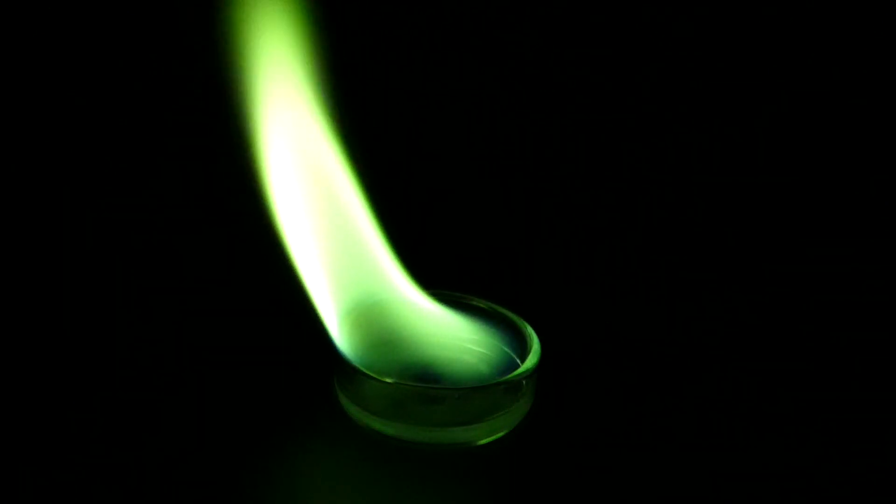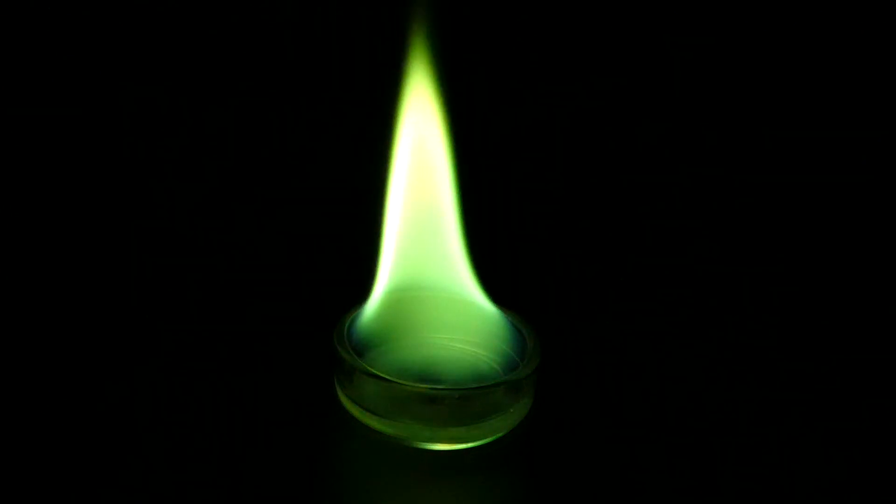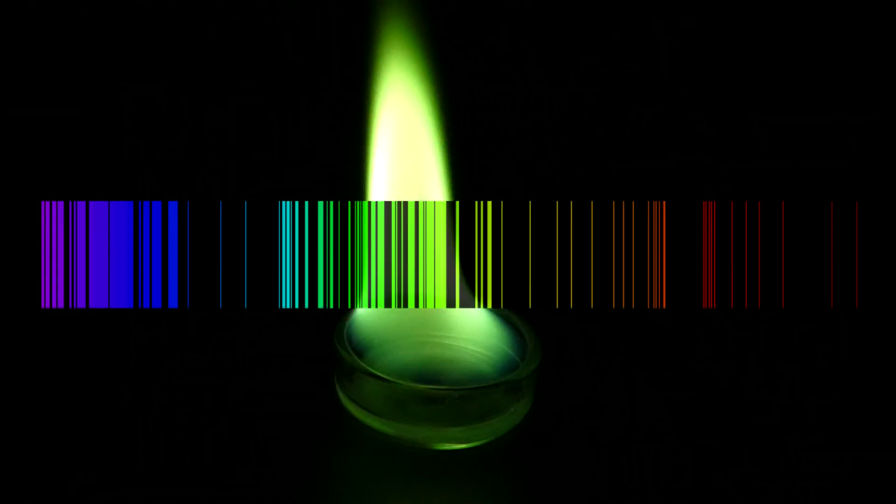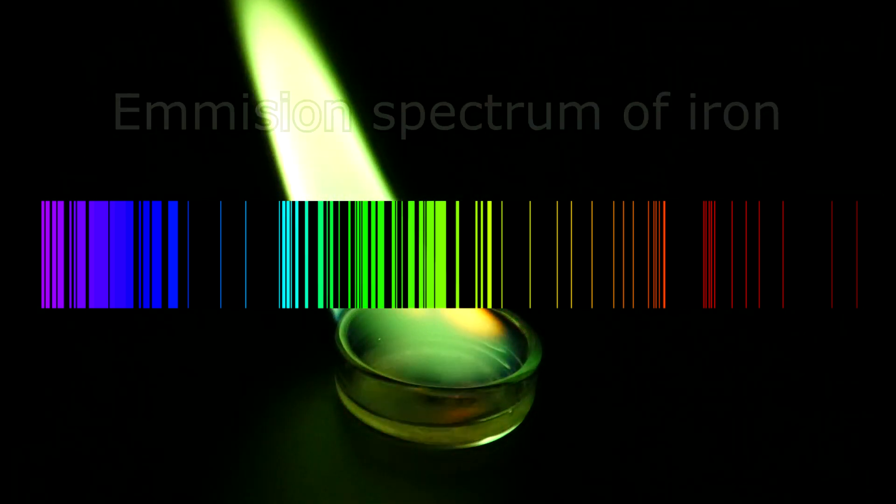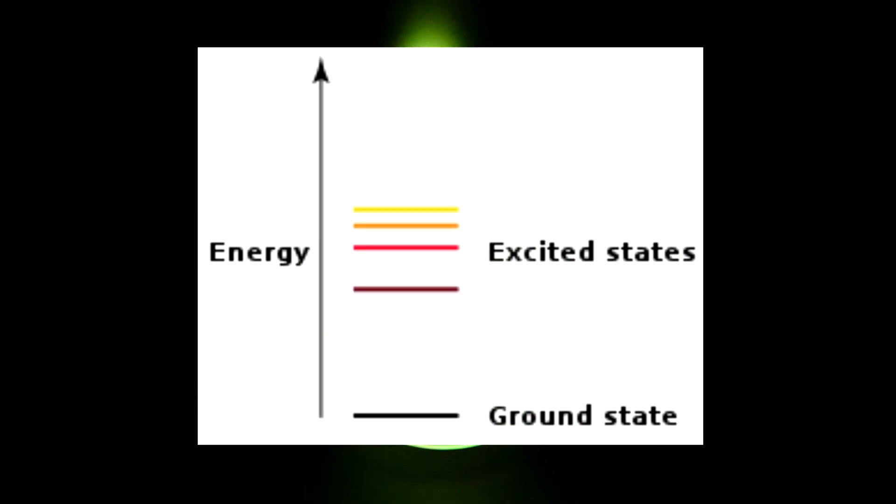So now that you know how to make a green flame let's explain how it works. Every molecule has something called an emission spectrum which means that if the particle receives enough energy, as for example heat, it enters an excited state in which it becomes more energized than normal.